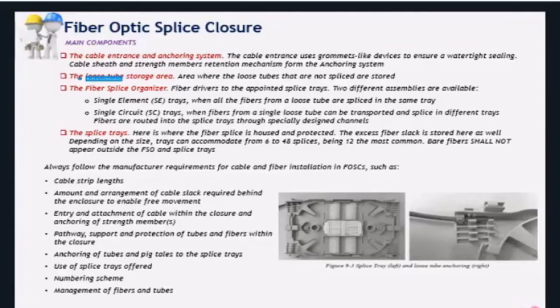Remember to always read the manufacturer requirements for cable and fiber installation, routing and operation inside the splice closures, with particular emphasis on the cable strip length, the amount and arrangement of slack loops, tubes and fibers, the entry and attachment of cables inside the closure, the anchoring of tubes and the mechanism to anchor these. Remember, do not over tighten them. The splice trays and how they are organized and structured, the number and the management of fibers and tubes.